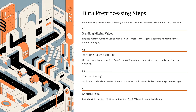Before training any model we need to clean and prepare the data. First, handle missing values by filling them using mean, median, or the most common category. Next, encode categorical data by converting text values like male or female into numbers using label or one-hot encoding. Then scale features using StandardScaler or MinMaxScaler to bring all values to a similar range. Finally, split the data — about 70 to 80 percent for training and the rest for testing — to check how well the model performs.